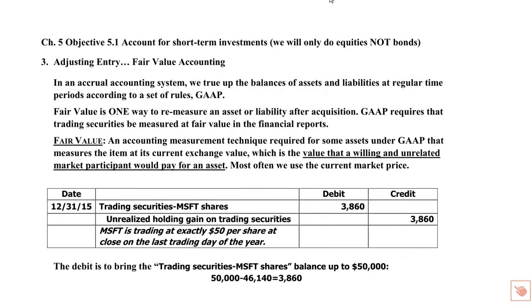We're going to skip investments in bonds, so we won't cover interest revenue, just dividend revenue. For trading securities, this is the most important part — it's really different than most of the accounting we've seen. Instead of taking cost and applying a formula to adjust the value, we're going to do what's called fair value accounting. Fair value is essentially a market price — the value at which willing and unrelated parties would pay for an asset. On the adjusting entry for a trading security at 12/31, the end of the year, we go find the market price.